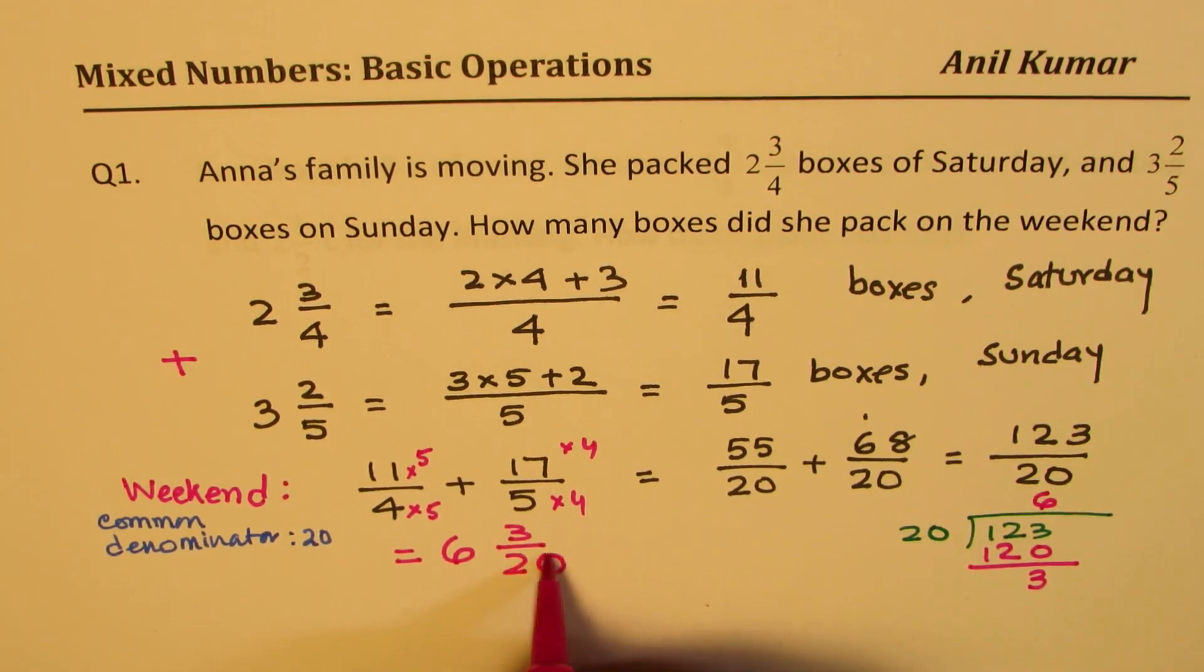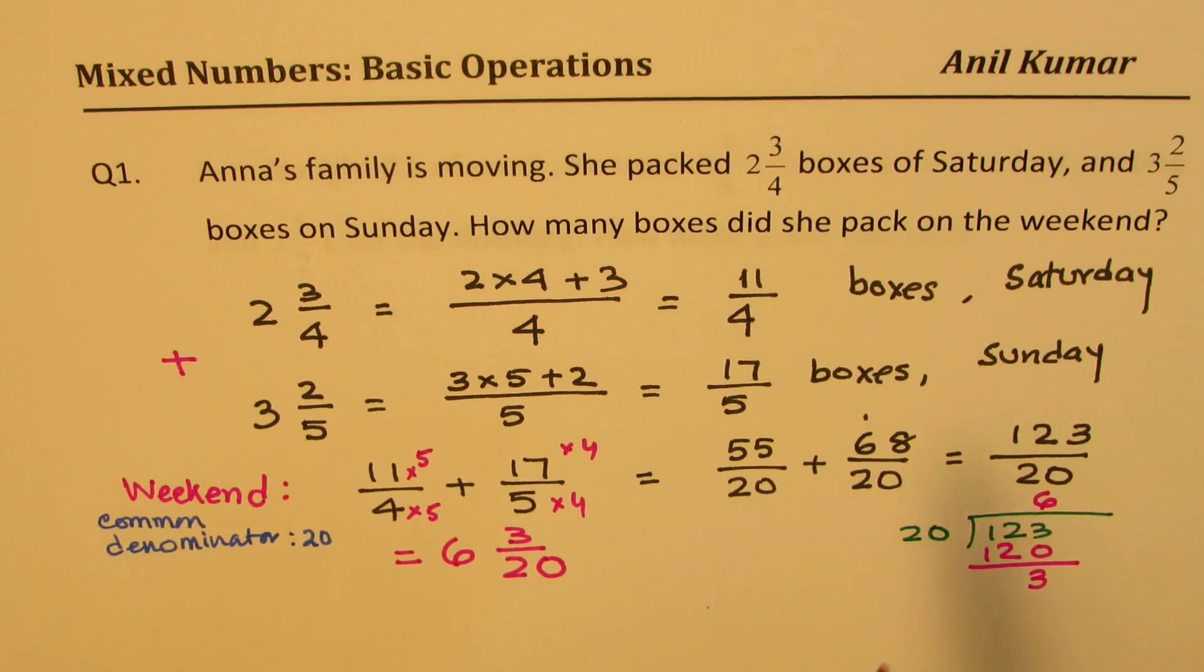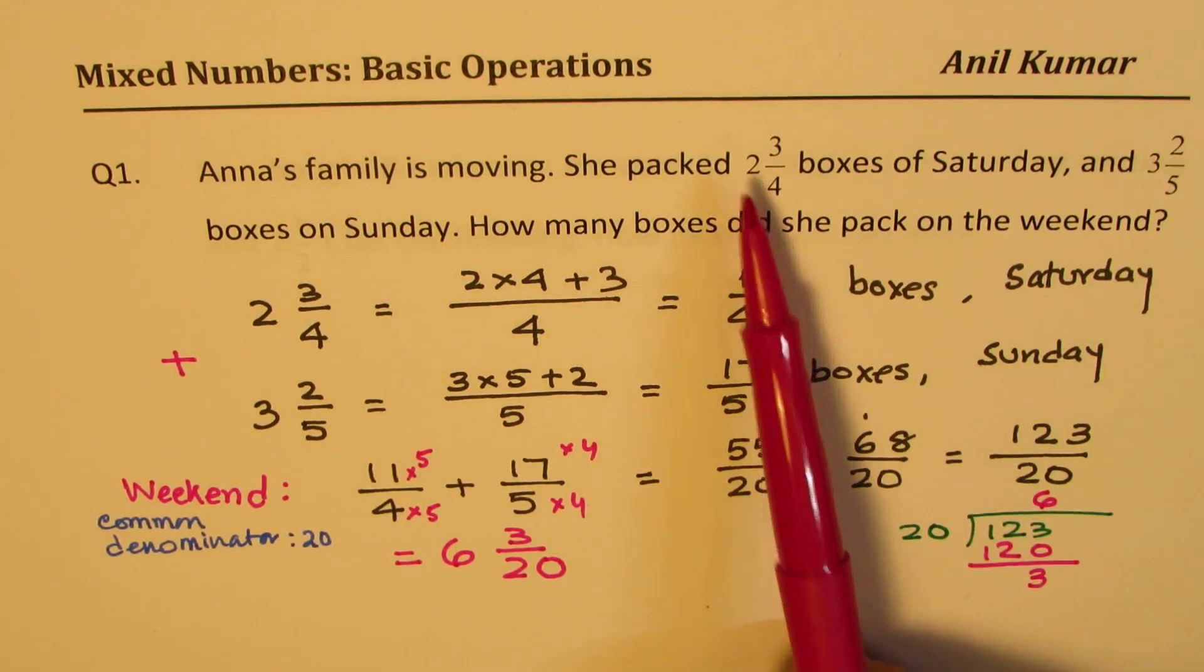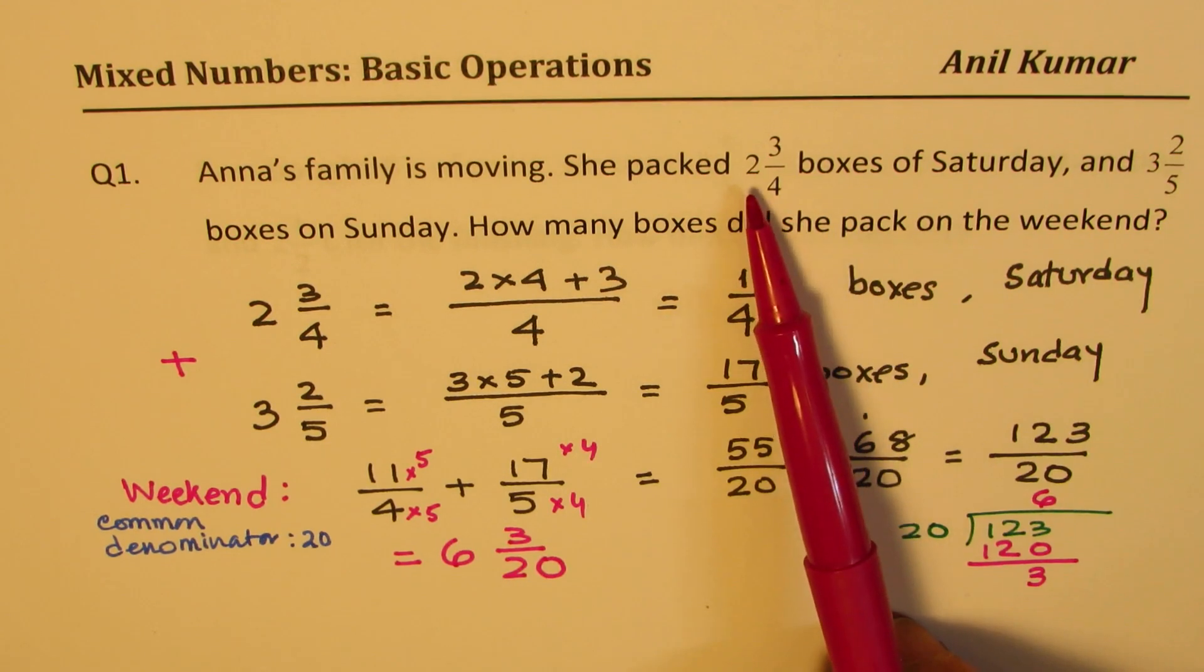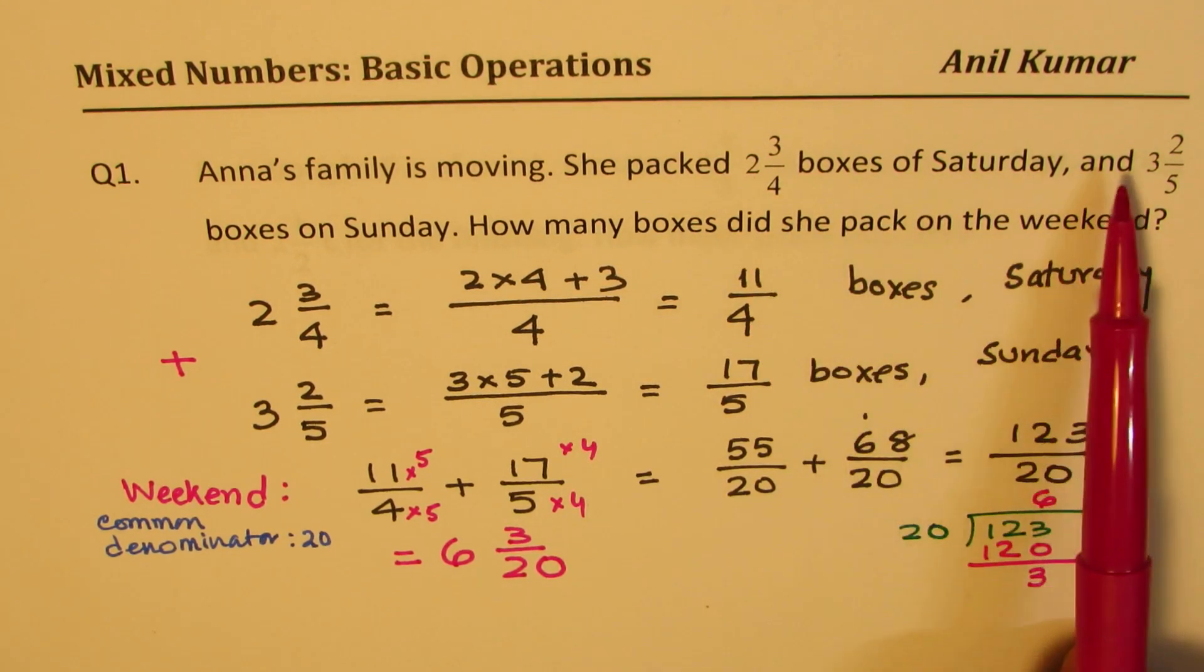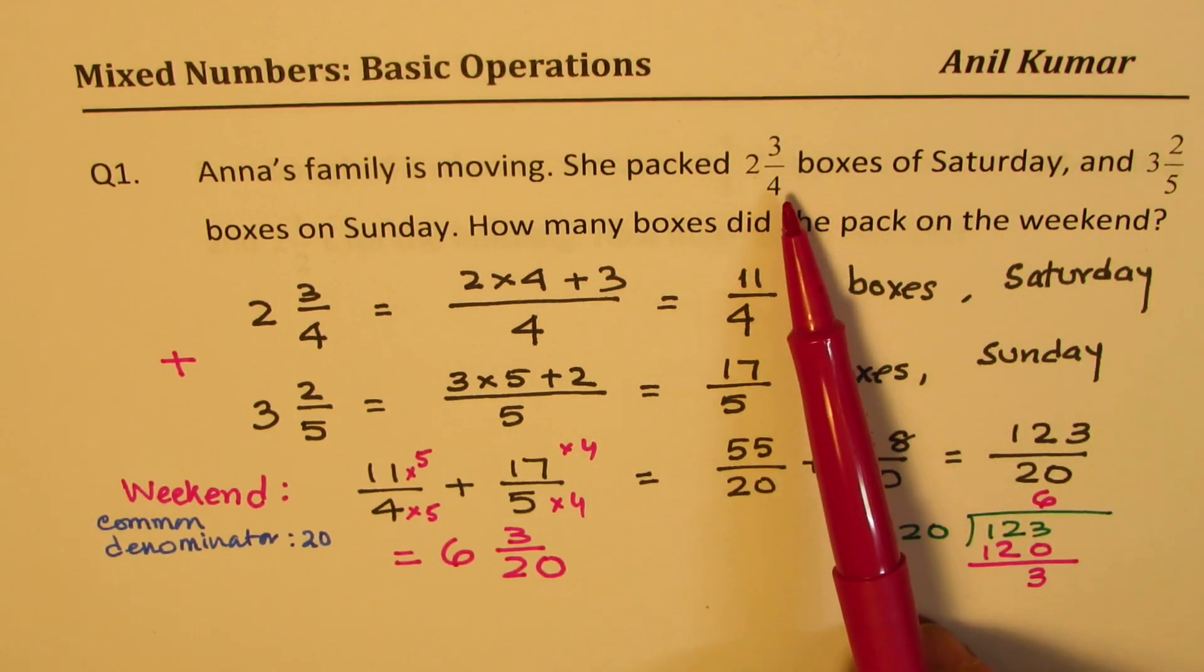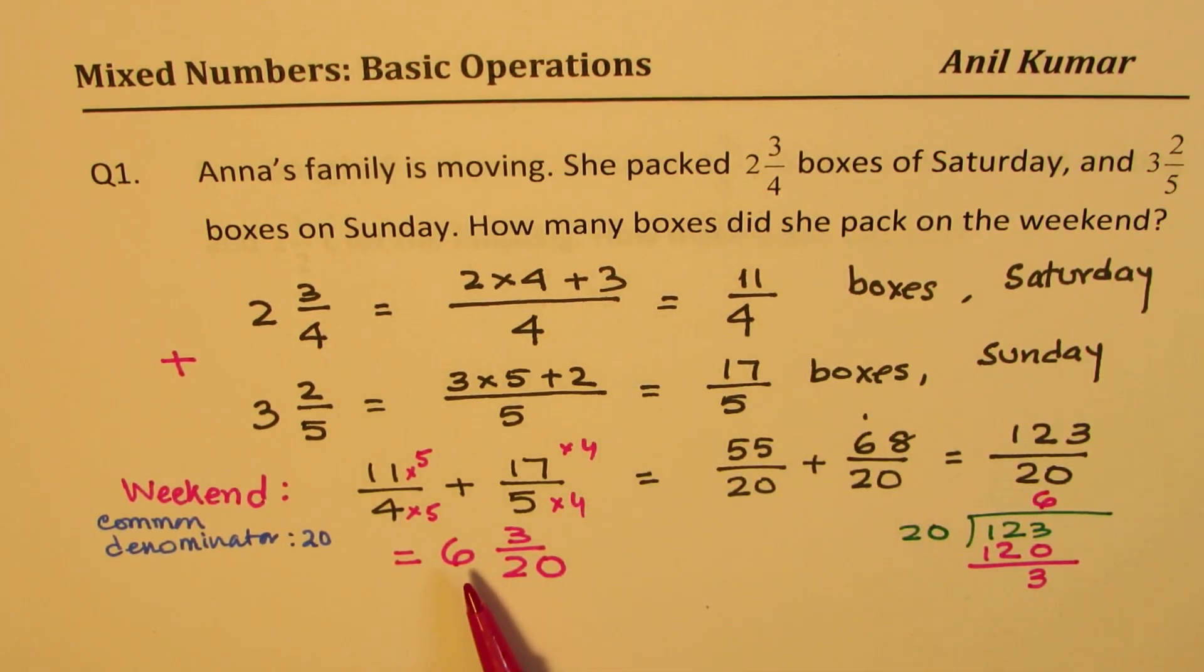So basically, this is equal to 6 whole 3 over 20. You get an idea, right? So that is how you could estimate also: 2 wholes and 3 wholes, we are expecting more than 5. Now, 3/4 is very close to 1 whole, so slightly more than 6. That is what we got as our answer. Perfect. So these are the steps involved to add improper fractions and solve a word problem.